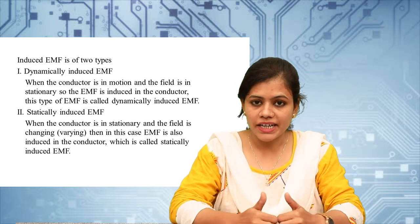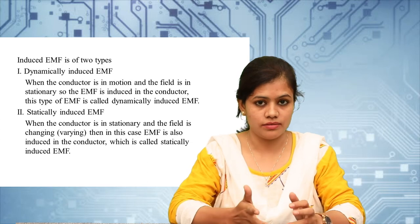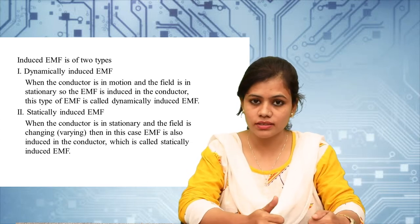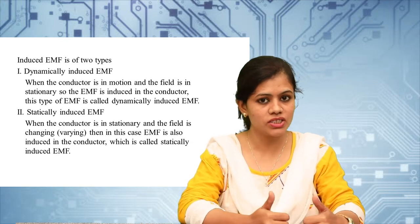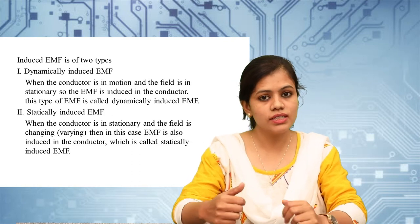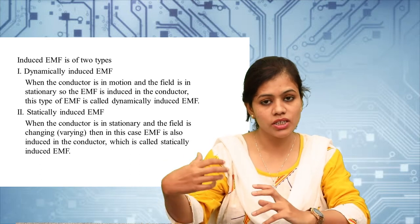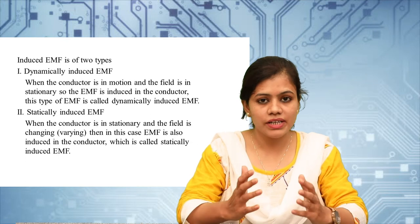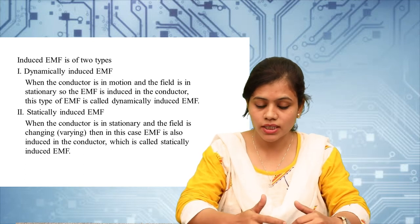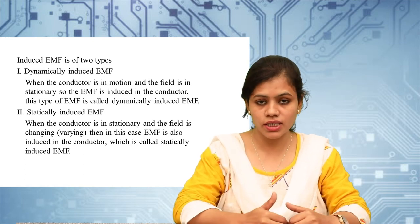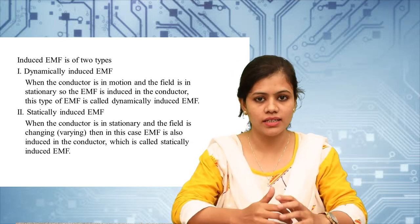Statically induced EMF means the conductor does not change position but the flux changes — for example, in a transformer the winding is fixed and the flux changes. Dynamically induced EMF, as in a generator or motor, involves rotating parts (the rotor). Whenever a conductor is placed in a magnetic field and the conductor moves, cutting the magnetic lines of force, the EMF induced is called dynamically induced EMF, according to Faraday's law of electromagnetic induction.